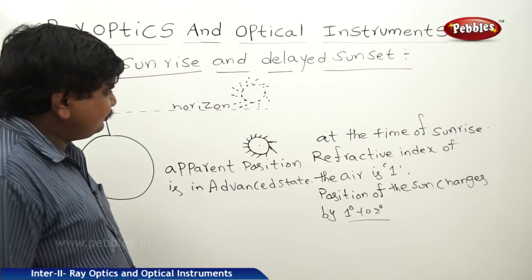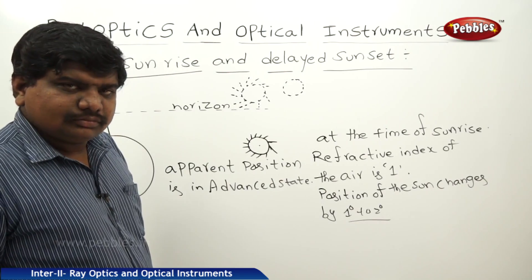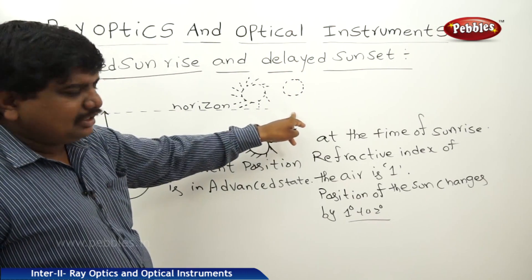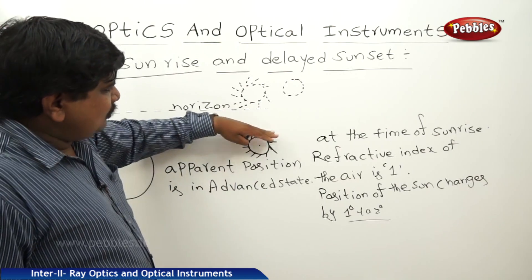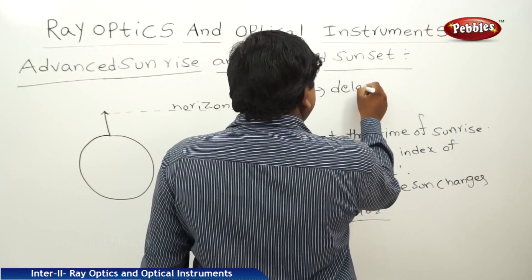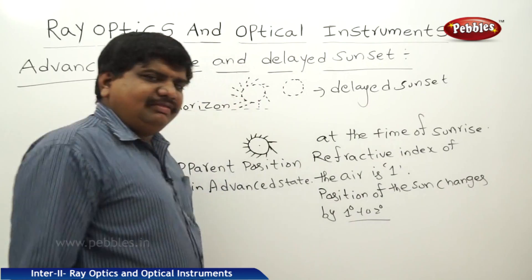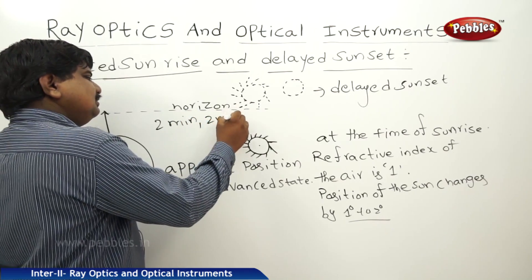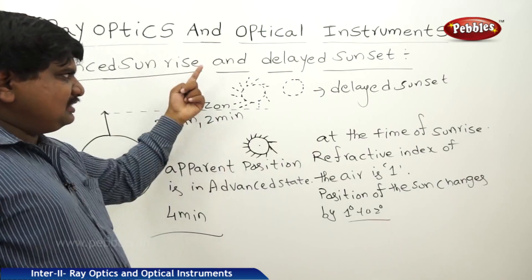At the time of sunset, the original position of the sun is such that the same atmospheric refraction effect causes a delayed sunset. Sunrise is advanced by 2 minutes and sunset is delayed by 2 minutes. So there is a total of 4 minutes difference between the original position of the sun and the apparent position, including both the sunset and sunrise effects.